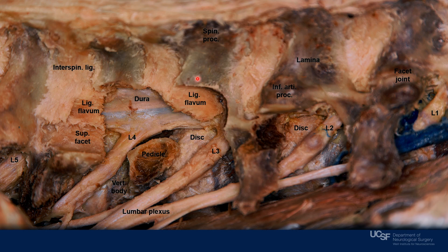After partially removing the lamina, we expose the ligamentum flavum. The ligamentum flavum of the lumbar region is the thickest of the entire spine. Once we remove the ligamentum flavum, we expose the dura covering the cauda equina, and we also visualize the exit of the nerve root, which is covered by a dural sleeve.